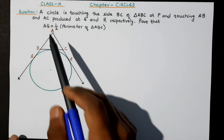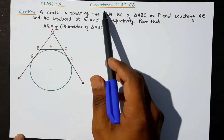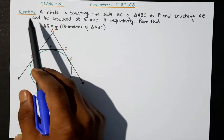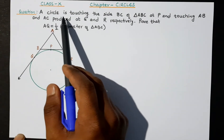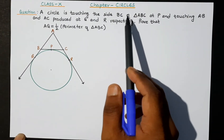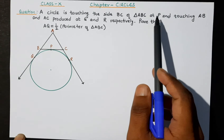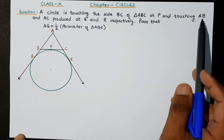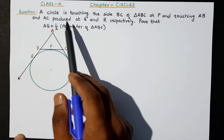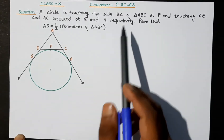This question is from class 10, chapter Circles. The question is: a circle is touching the side BC of triangle ABC at P, and touching AB and AC produced at Q and R respectively.